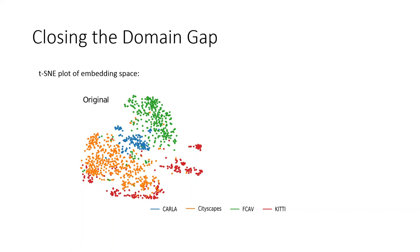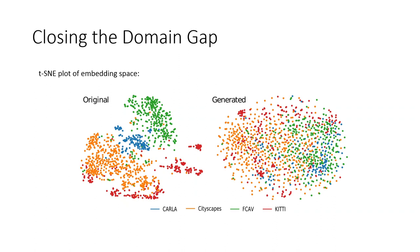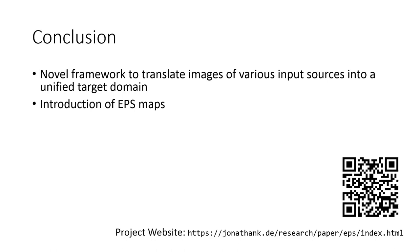Our output images should not only resemble the scene of the input image, they should also have a uniform look independent from the input source. To objectively evaluate this, we train an autoencoder to recreate images and visualize its embedding space using a t-SNE dimension reduction. When the input images are used, clear clusters emerge, suggesting that the input domain can be easily extracted from the images. In the second round, generated images from the same sources are processed in the same fashion. This time the distribution in the embedding space is much more uniform and clear clusters no longer exist, suggesting that the domain gap was successfully closed.